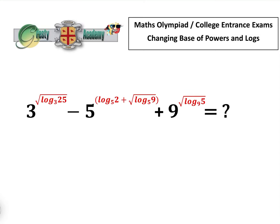This is a great question for checking how much you really know about logs and powers. What we're going to do is look at changing the base of powers and logs to simplify this expression, which does look a little horrific. We've got 3, 5, and 9 to the power of something, and logs to base 3, base 5, and base 9. Our plan is to convert all of these to the same base. Given that 9 is 3 squared, it makes sense to convert everything to base 3.